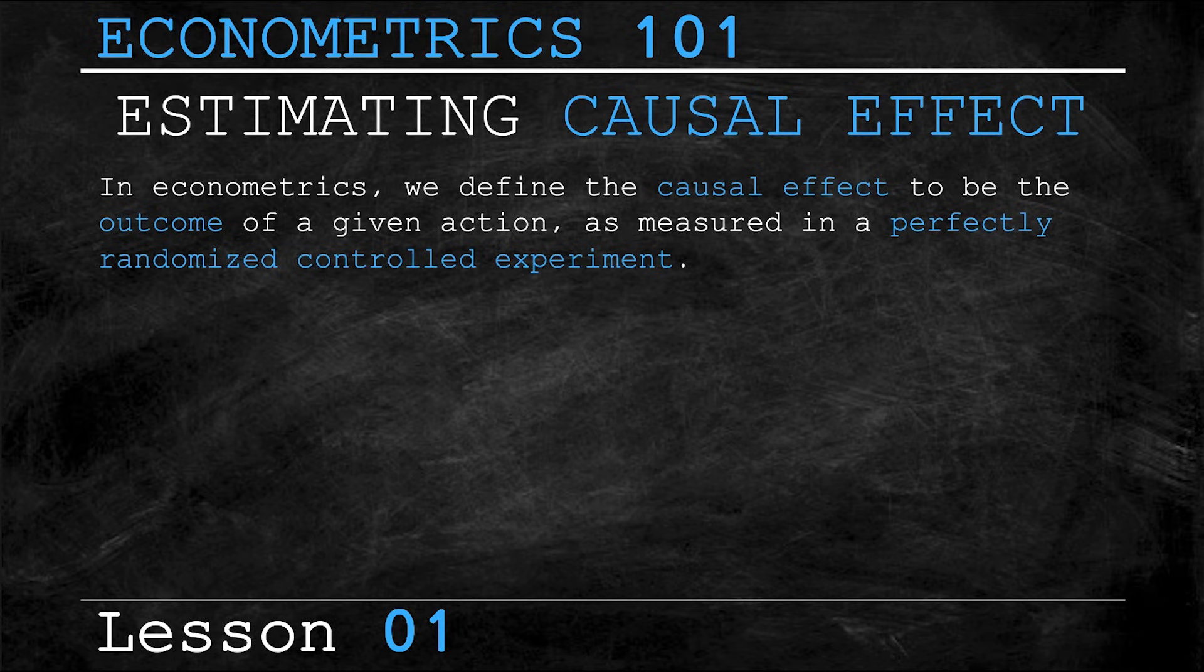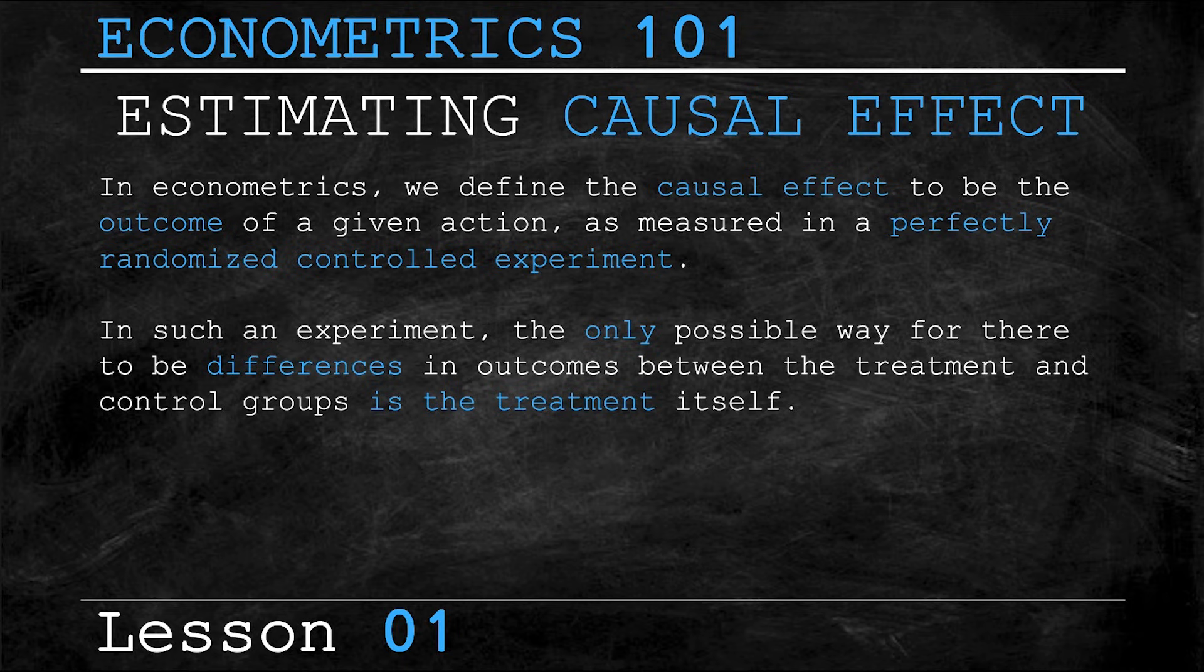Now there are a couple of key points worth remembering when we look at randomized controlled experiments. In econometrics, we define causal effect to be the outcome of a given action as measured in a perfectly randomized controlled experiment. In such an experiment, the only possible way for there to be differences in outcomes between the treatment group and the control group is the treatment itself. If you don't know the difference between a treatment group and a control group, don't worry. We'll go into detail on this topic in a future video dedicated to the concept.